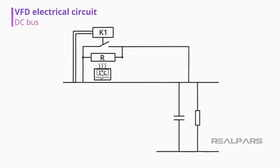When we energize our VFD and the bank of capacitors is not yet charged, the capacitors start to charge by the resistors. Once the VFD controls identify that the DC link is fully charged, it will then close the contact, becoming the path of least resistance for the electric current.